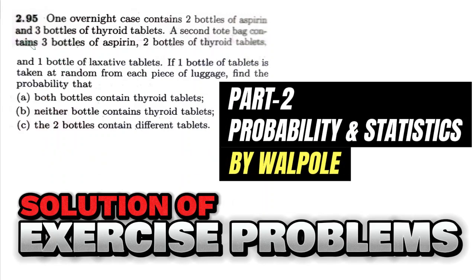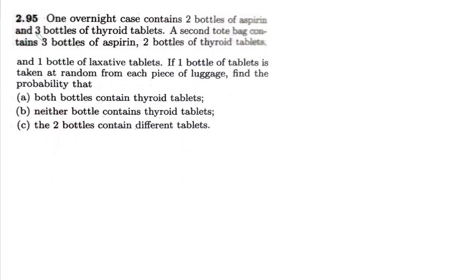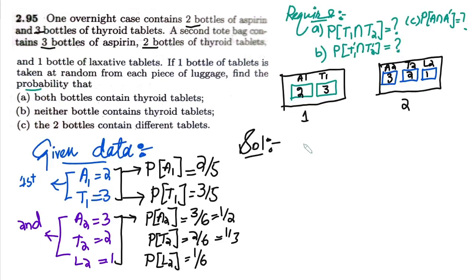Welcome back guys. This is question 2.95 of the 8th edition. Part B, we have to find that neither bottles contain thyroid tablets.